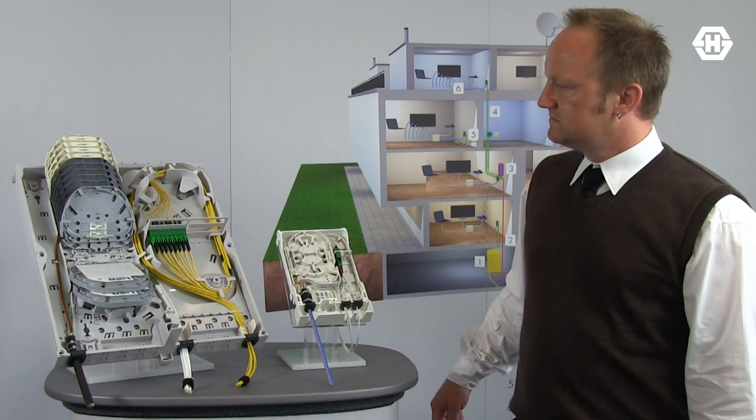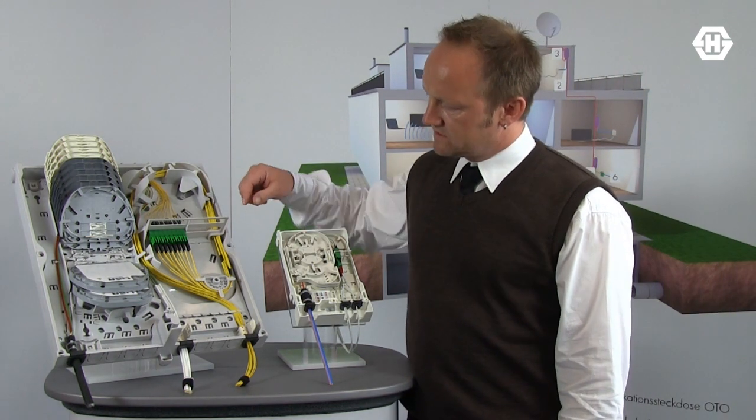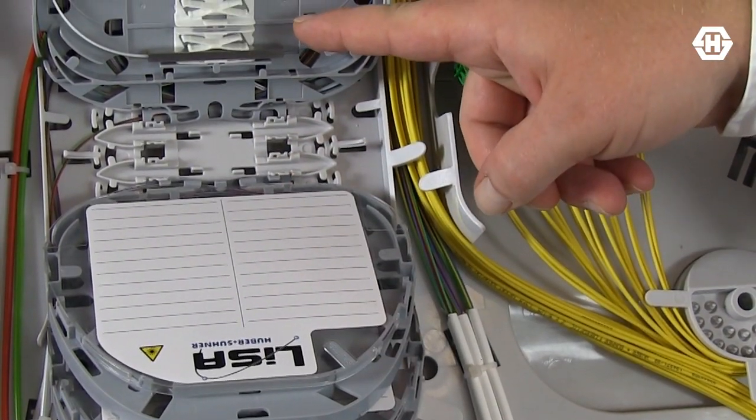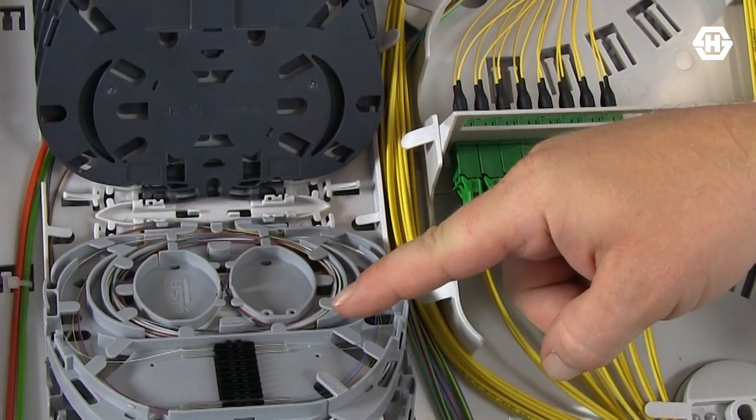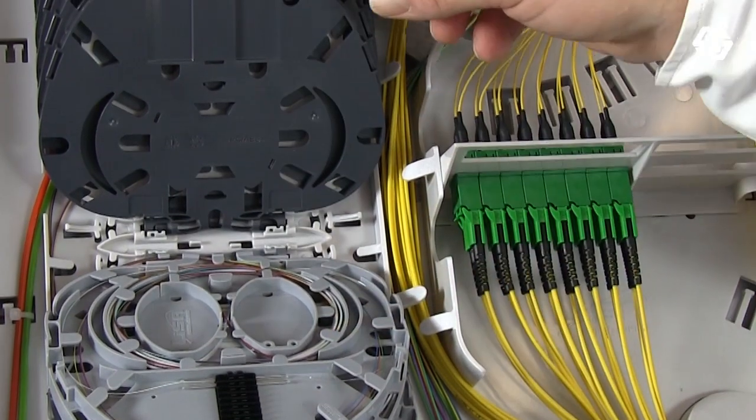This cassette system has three different types. The splitter cassettes, where you can implement on one side your splitter and the other side up to 24 splices.